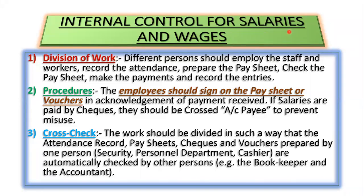The calculation of salary and wages includes deductions such as income tax, professional tax, and provident fund. After deductions, you calculate the net amount payable to each employee. Salaries and wages are usually paid through banks. Keeping all these things in mind, we have to make a proper internal control and follow a proper internal check procedure.